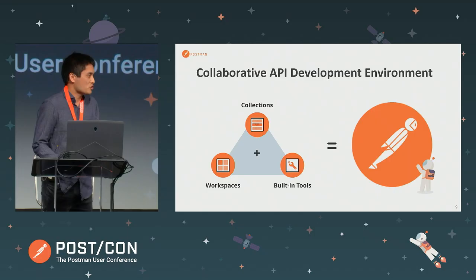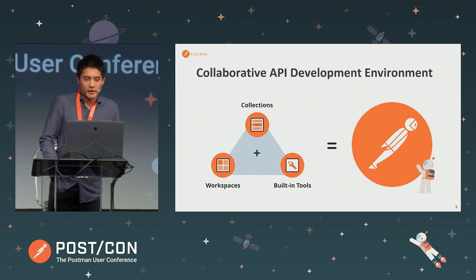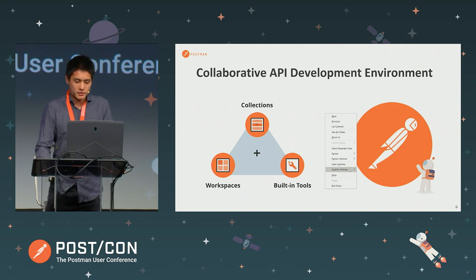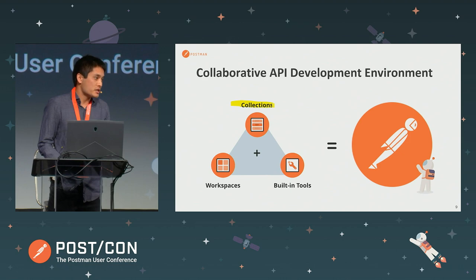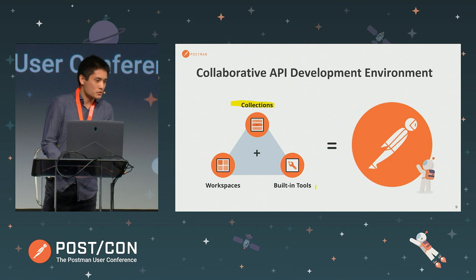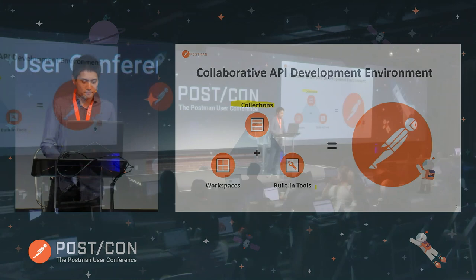We call it an API development environment — a tool that helps you to manage the development and lifecycle of an API. We have a concept called collections, which is one of the main concepts in Postman, and a lot of the features in the product are backed by what we call a collection. Postman also has a set of built-in tools to help you manage those APIs: tools for creating mocks, generating documentation, publishing documentation, running tests, etc. All these tools work together in what we call a workspace, which is like a real-time collaborative environment.